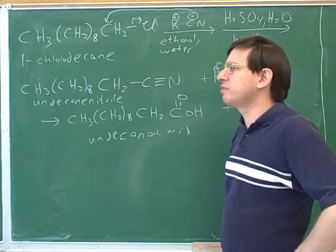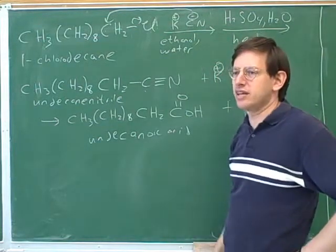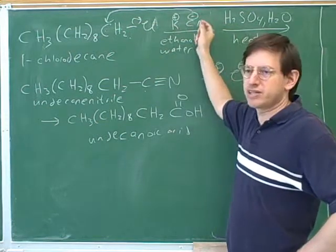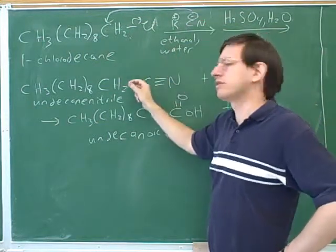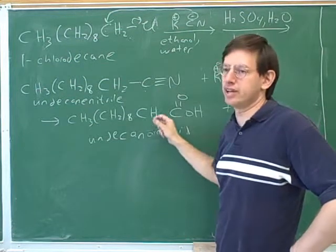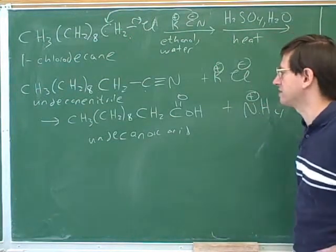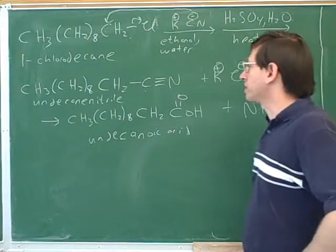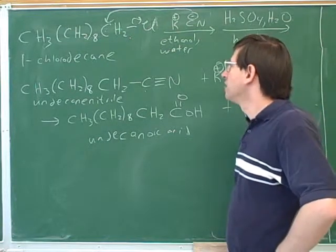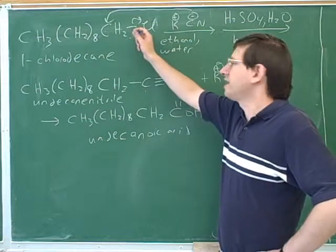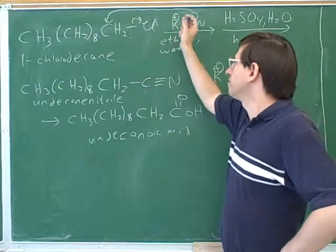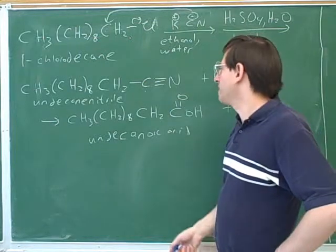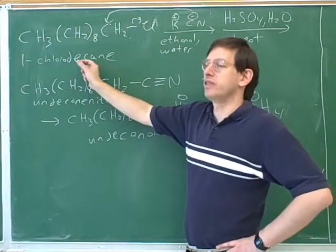They can say to themselves, I know one way to do this is nitrile hydrolysis. But that will only work if I can turn this into a nitrile. Well, that's not very hard because cyanide is a nucleophile. It's not hard to turn this into a nitrile, and then they can do the hydrolysis. However, this only works if you want to make a carboxylic acid with one more carbon than we started with. Because in order to make the nitrile, you have to add this carbon here. So we ended up with undecane when we started only with decane.